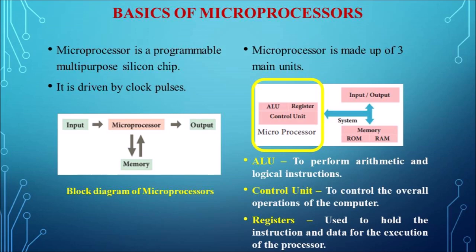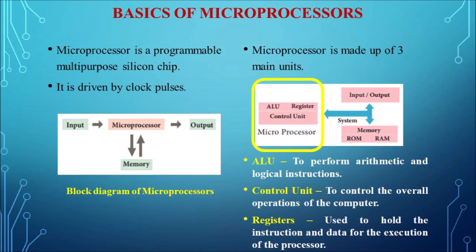The microprocessor communicates with memory units — ROM (read only memory) and RAM (random access memory) — and with input/output devices, with the help of the system bus. The system bus is a collection of wires comprising three types of buses: address bus, data bus, and control bus. The address bus carries the address of the memory location; the data bus carries data from one location to another; and the control bus carries the control flow between devices. All of these serve as communication channels between the microprocessor and other devices.